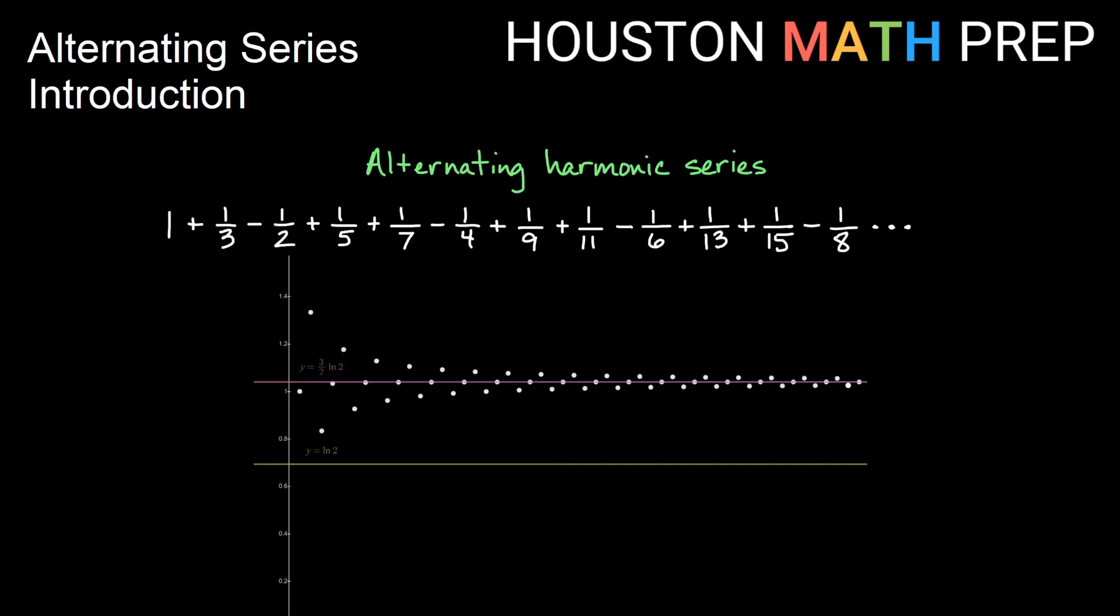So alternating series have this weird type of converging behavior where rearrangement will affect the actual sum. This is called conditional convergence, and that's up in our next video on absolute and conditional convergence of alternating series. Thanks for watching, everyone. We'll see you in the next video.